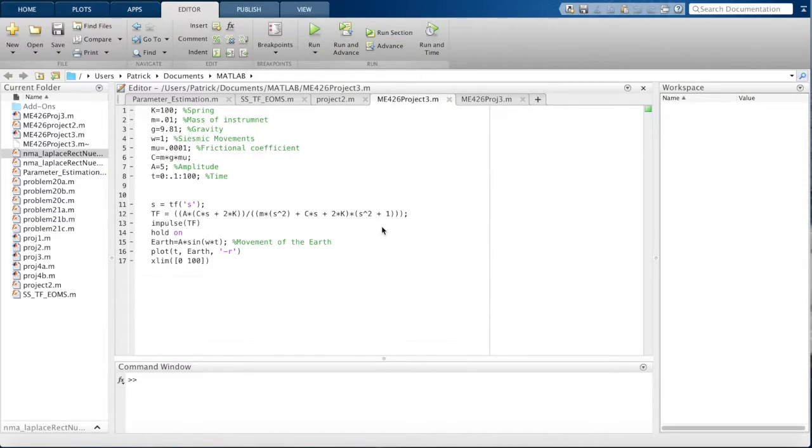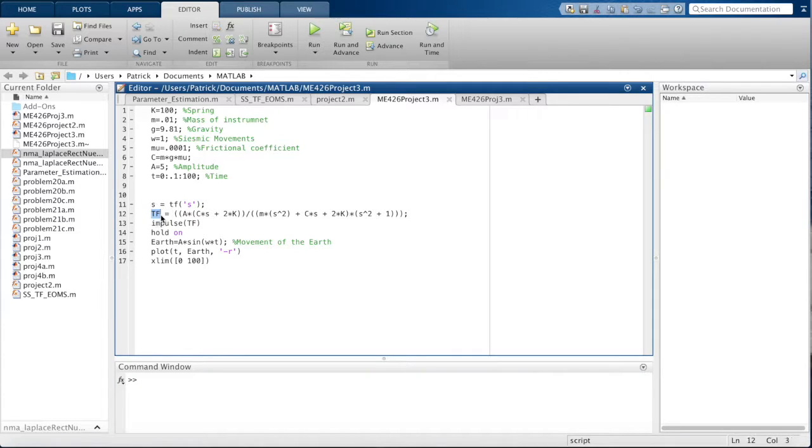After deriving the transfer function, we put the transfer function into MATLAB. We basically inputted values to satisfy the equation. We chose k to be 100 and the mass to be 0.01. These values gave us the best representation of the earth's motion.